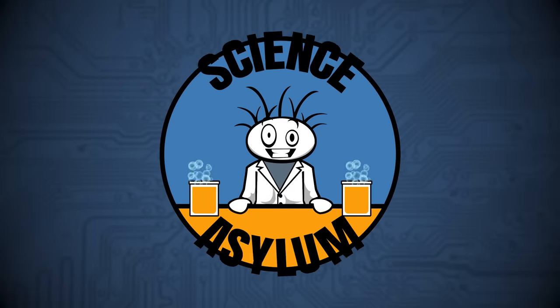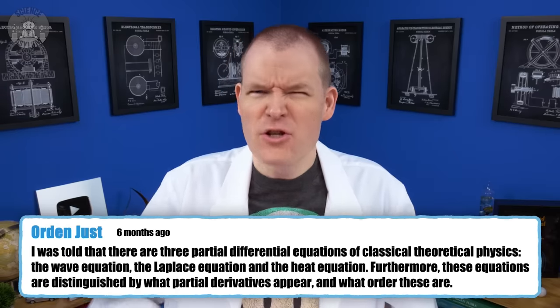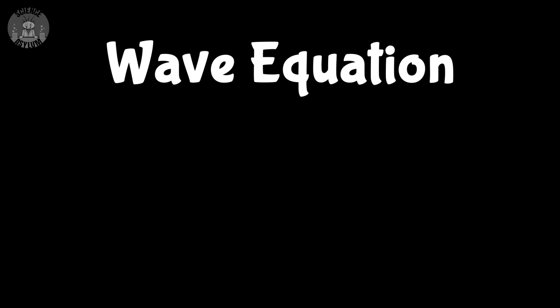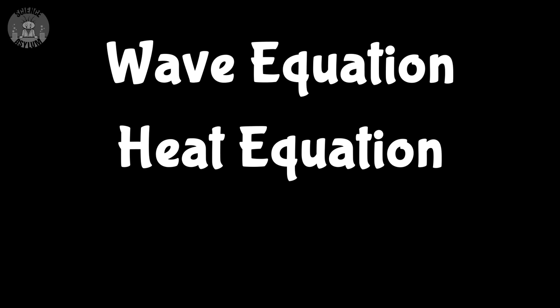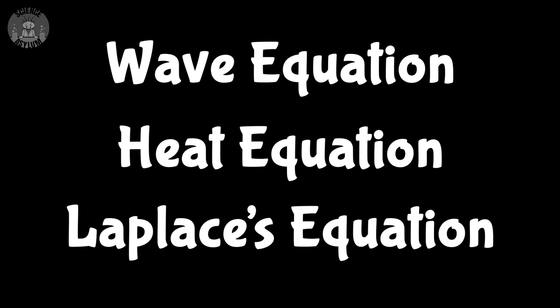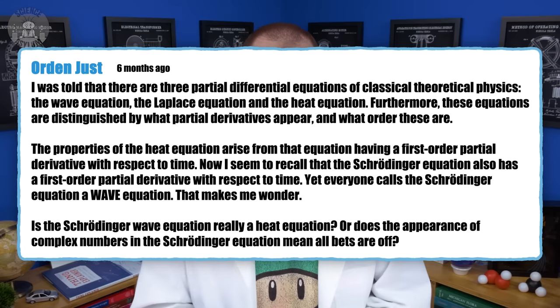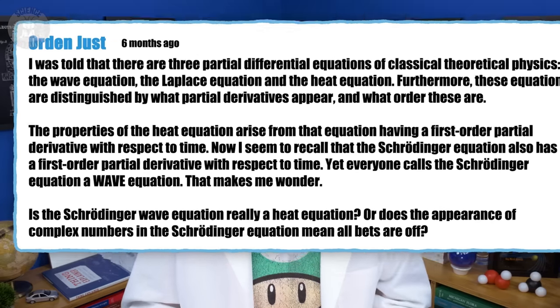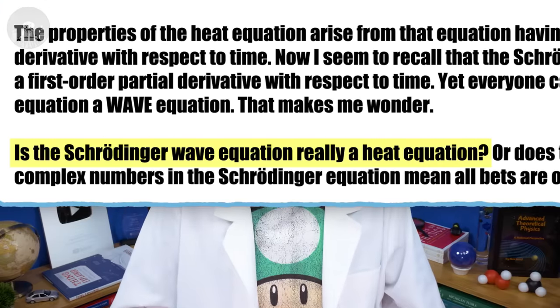Well, maybe not. A viewer named Ordon mentioned there were only three partial differential equations: the wave equation, the heat equation, and Laplace's equation — at least for classical theoretical physics anyway. With that many qualifiers, I'm not sure that statement says anything all that profound. But their comment goes further. Ordon is suggesting that Schrödinger's equation isn't a wave equation at all, but is actually the heat equation applied to quantum particles. And we're taking that seriously. Yeah, why not? So what makes an equation a wave equation? That sounds like a great place to start.